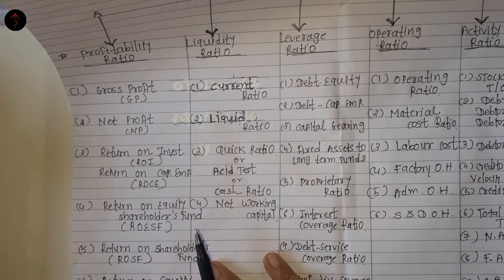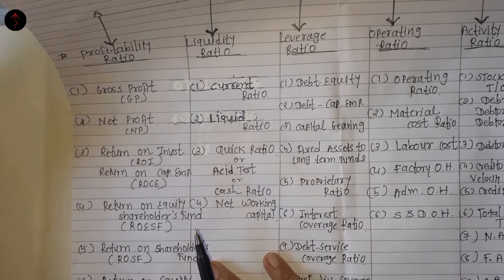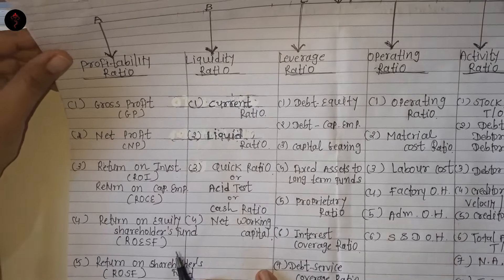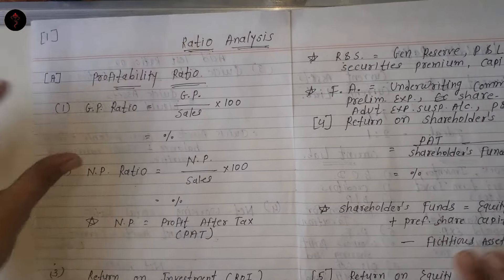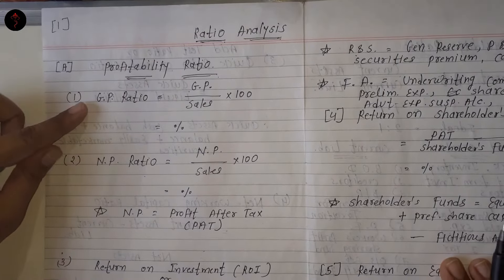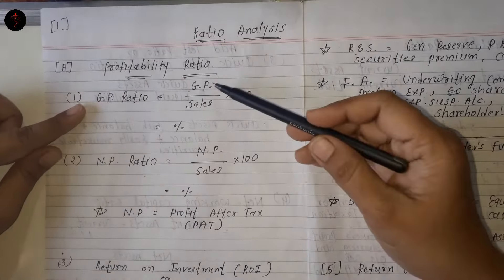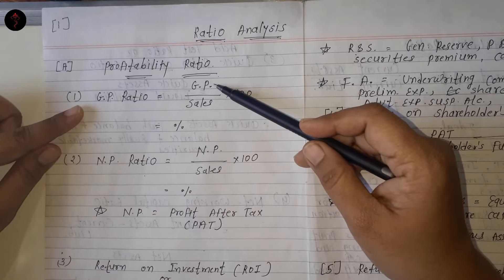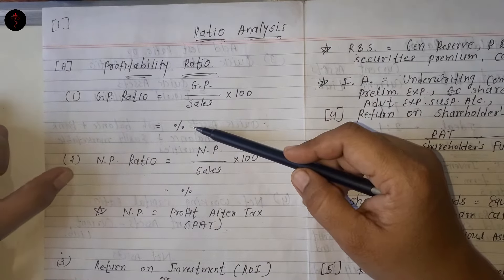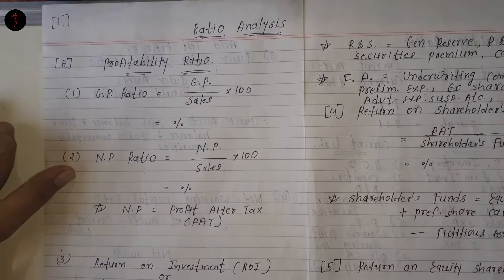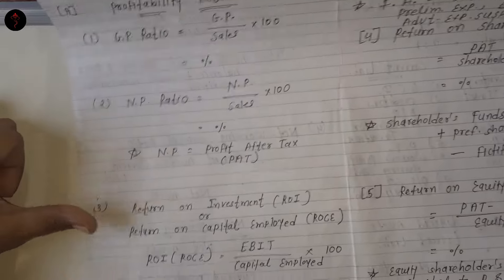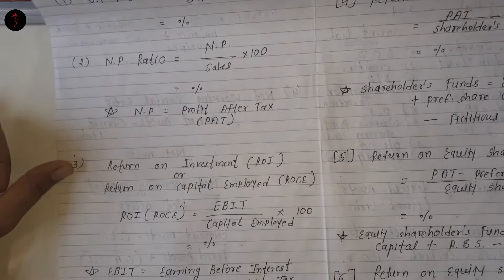TY यानि third year के जो students हैं, उनके भी ratio chapter हैं, तो वो भी इससे समझ सकते हैं. Profitability ratio में first is GP ratio — formula: GP upon Sales into 100, GP means gross profit, answer obviously in percentage. Net profit ratio — that is net profit upon sales into 100, answer is in percentage. Net profit का मतलब होता है profit after tax.